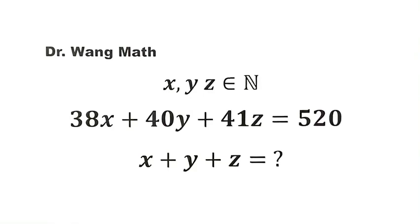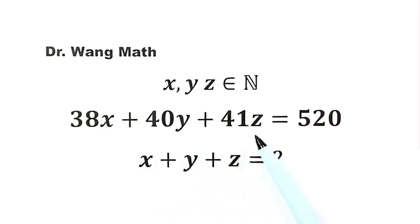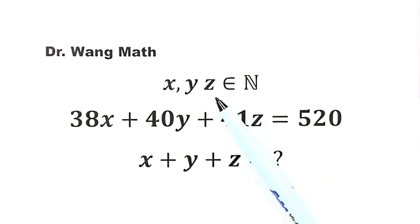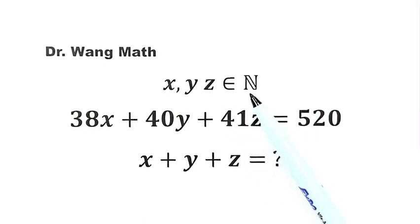In this video, we can solve this question. Given 38x plus 40y plus 41z equals 520, where x, y, and z are natural numbers. Then what is x plus y plus z?